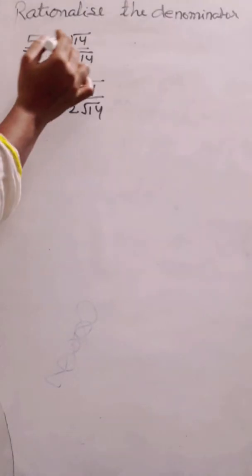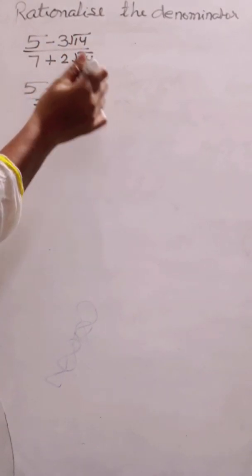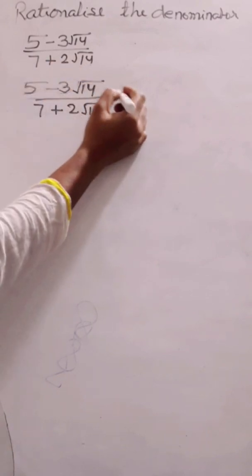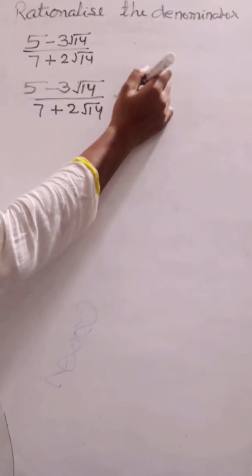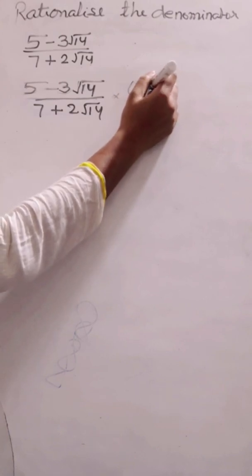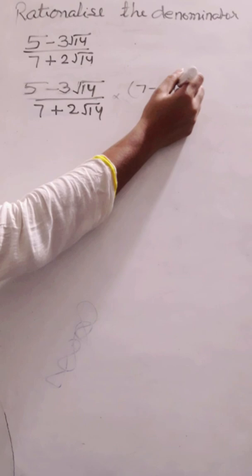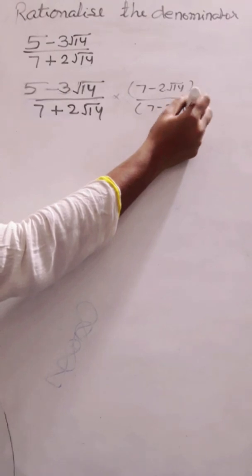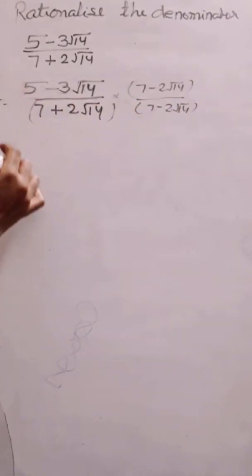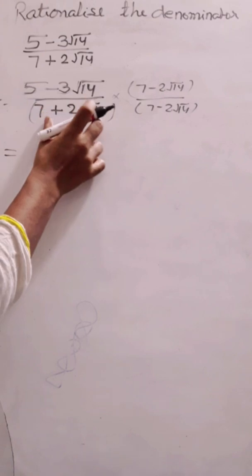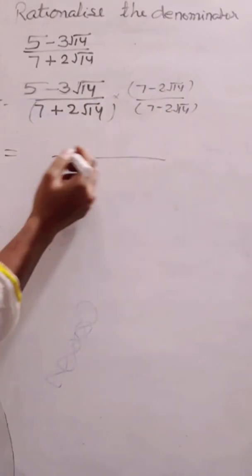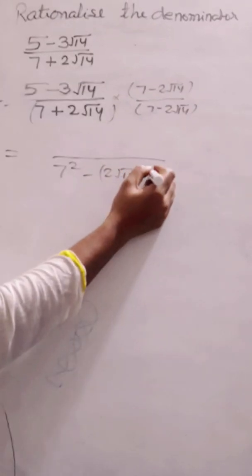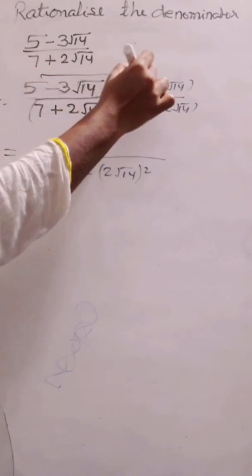The next question is (5 - 3√14) divided by (7 + 2√14). We need to rationalize the denominator. So we multiply by (7 - 2√14) over (7 - 2√14) — the same denominator with the middle sign changed — in both numerator and denominator. In the denominator we now have (a + b)(a - b), giving us a² minus b², which is 7² minus (2√14)².